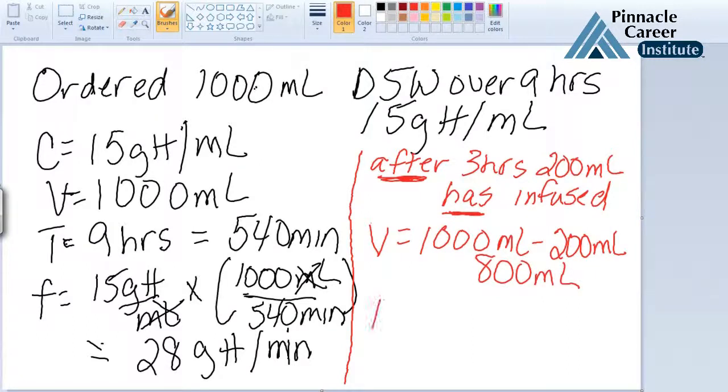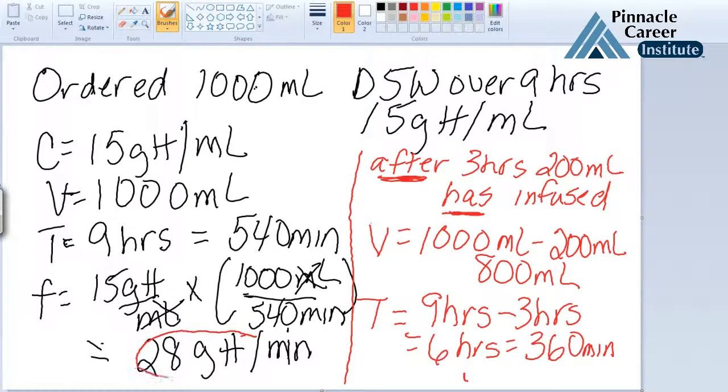And your time started with 9 hours, but you're going to subtract the 3 hours. So you now have 6 hours, which is 360 minutes. Now you're going to do the same exact equation that you did over here with your new variables. And your answer should be different than 28 gtt per minute because you've had to adjust your volume and your time.